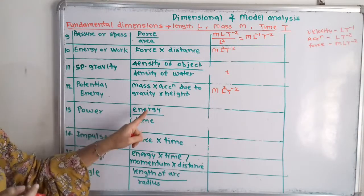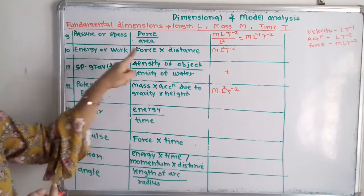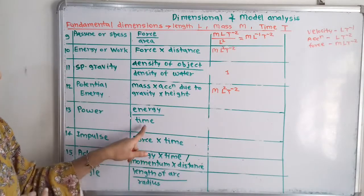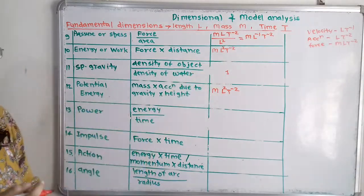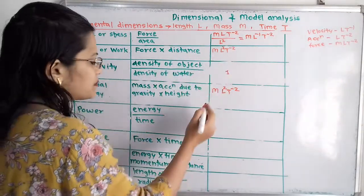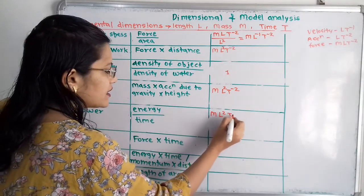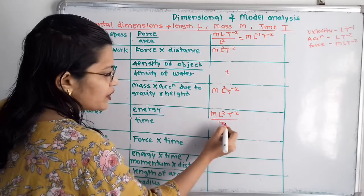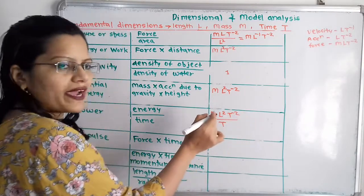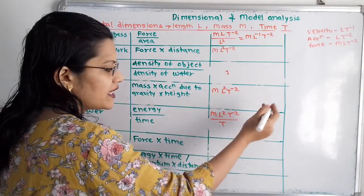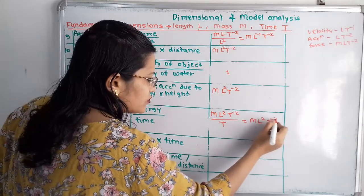Then power. Power is energy upon time. Energy is ML squared T raised to minus 2 divided by time T. Shifting T to the numerator gives T raised to minus 1, so T raised to minus 2 plus minus 1 equals T raised to minus 3. The dimension is ML squared T raised to minus 3.